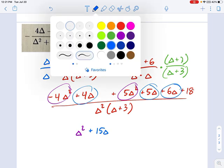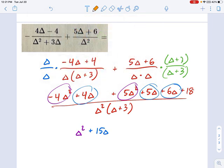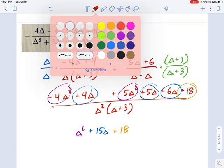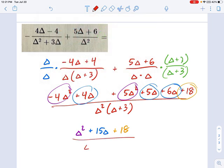And at the very end, all by itself, is a numeric term 18. So we have 18. So that's my numerator, and it's over delta squared times delta plus 3.